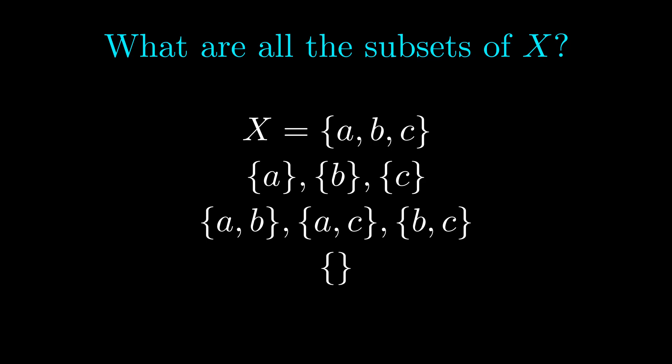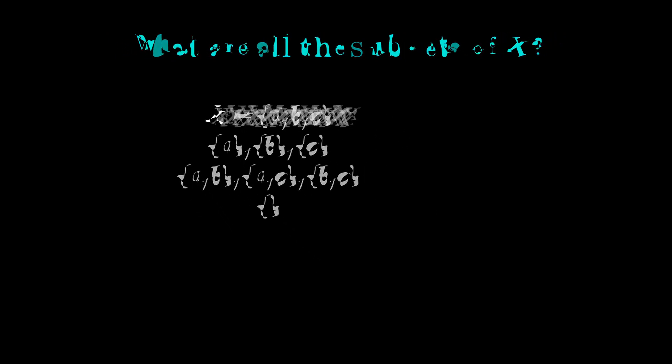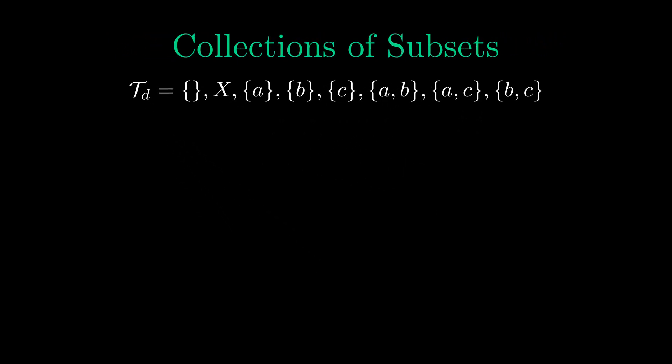And the next thing we can do is to form different collections with them. For instance, we can collect all of them together to form a collection we'll call T sub D. You will see why I'm calling it this in just a moment. We could also form a collection with just the empty set and X, and there are various other ways we can collect these subsets together.